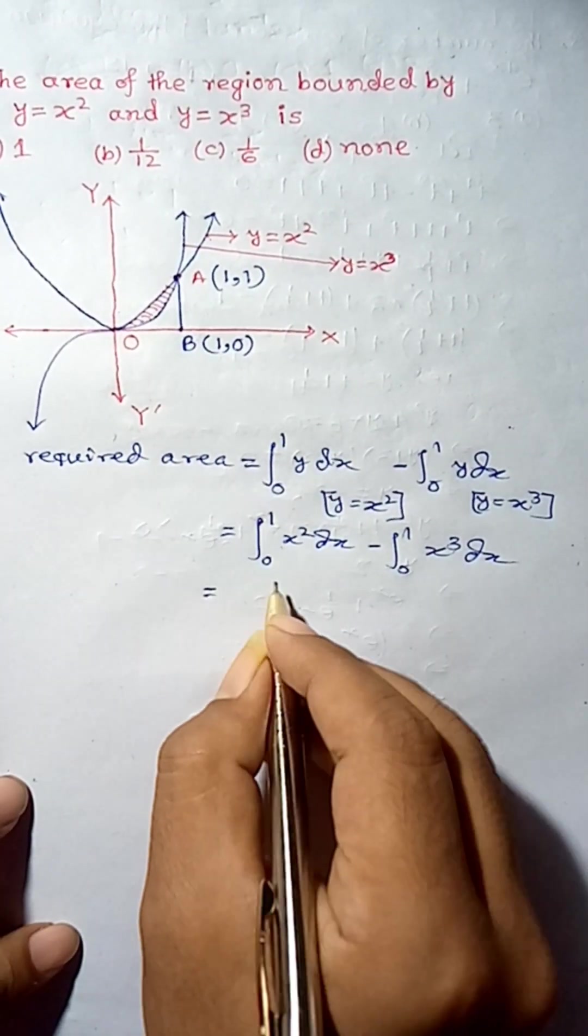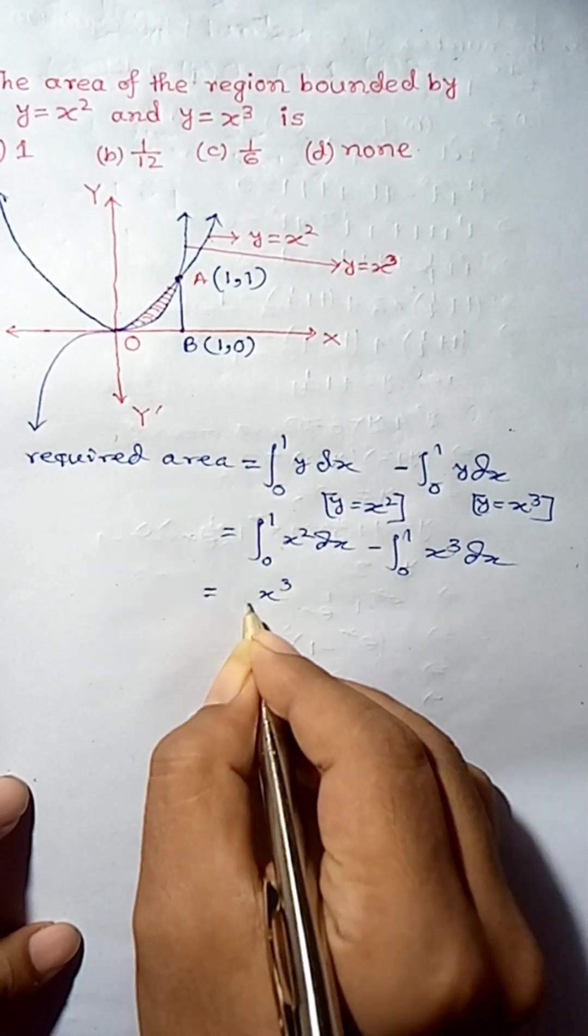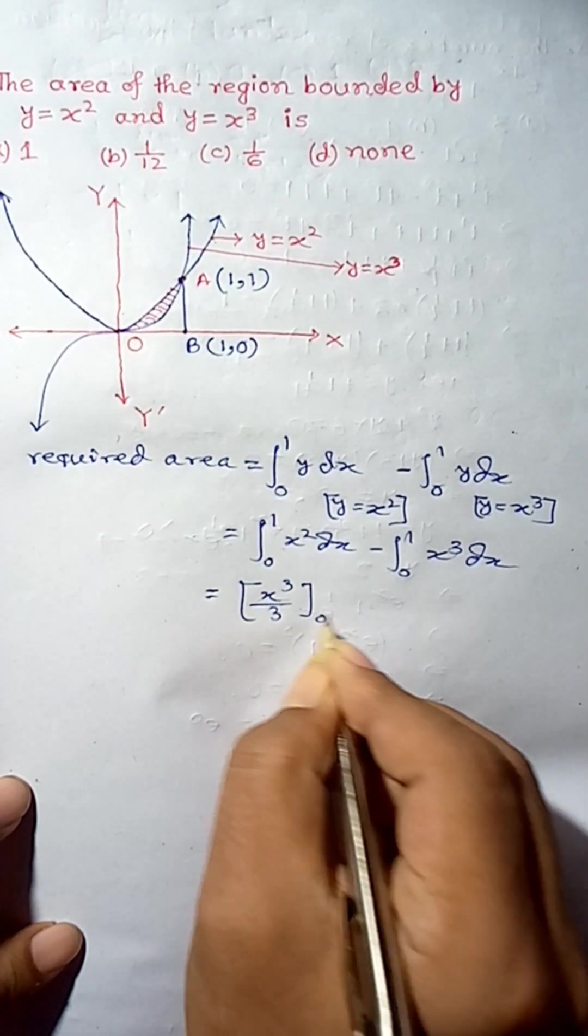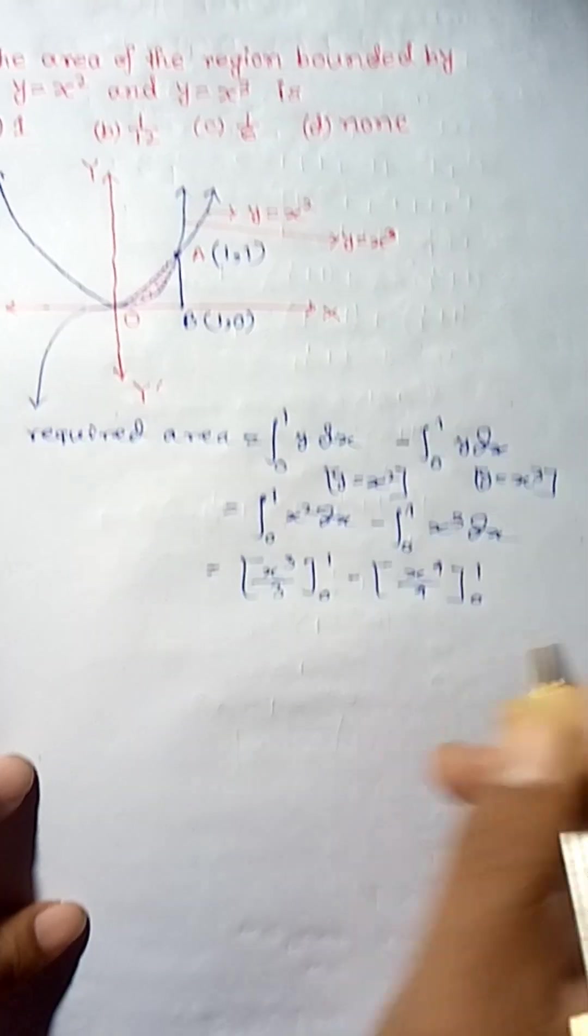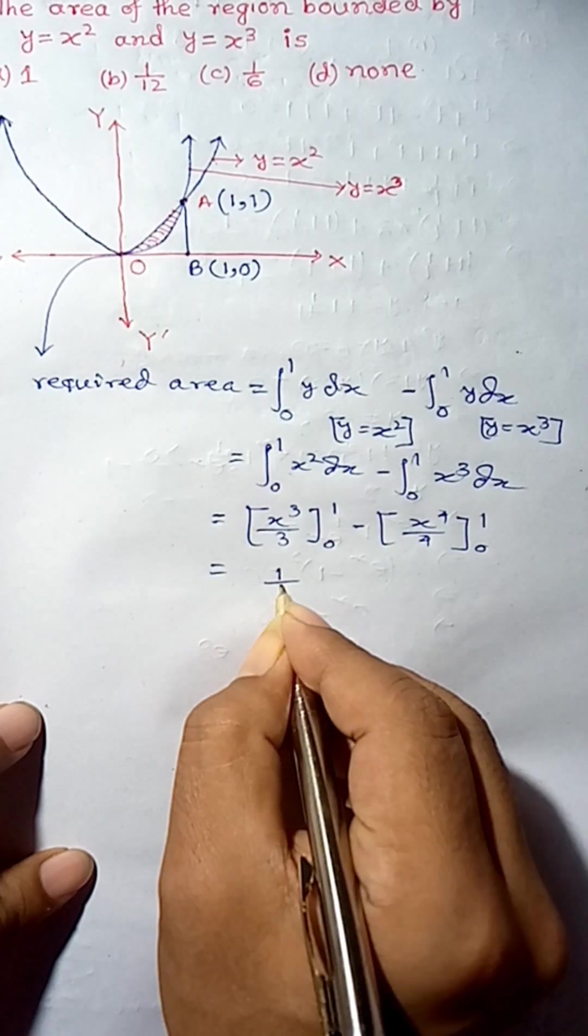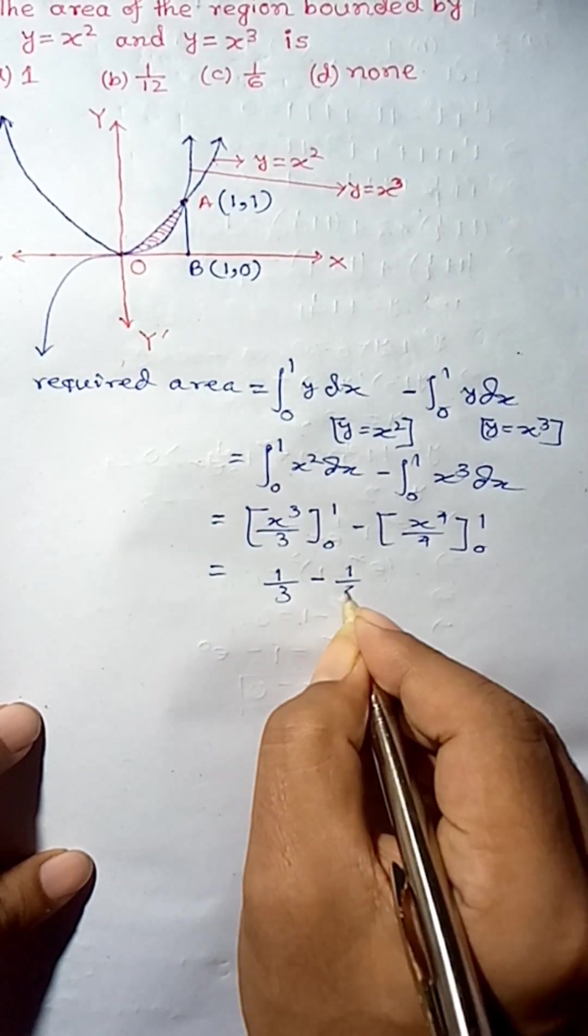Okay, so this is x to the power 3 upon 3, 0 to 1 and this is going to be x to the power 4 upon 4, 0 to 1. So, this is 1 upon 3 and this is 1 upon 4.